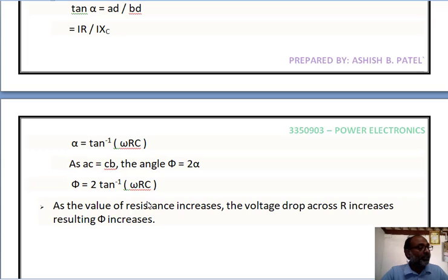If we are increasing the value of the resistance, ultimately it increases the voltage drop across this resistance. That means VR = IR, and it decreases the voltage drop in the capacitor, VC = IXC. Due to this, as a result, the phase angle phi is increased. Due to this increase in phase angle, the firing angle of the SCR is also increased, which reduces the current IDC.